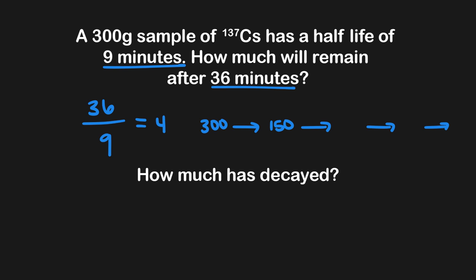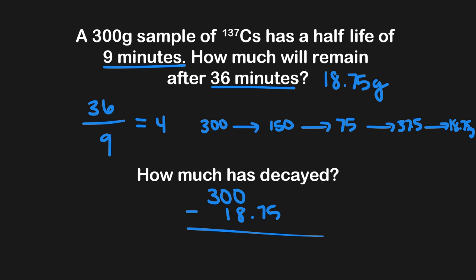So 300 is halved to 150, then 150 becomes 75, half of 75 is 37.5, and half of 37.5 is 18.75 grams. So the amount remaining after 36 minutes is 18.75 grams. If we want to know how much has decayed: we started with 300 grams and end with 18.75 grams, so 300 minus 18.75 equals 281.25 grams decayed. It's really important to note the difference — whether the question asks about remaining or decayed — because we get drastically different correct answers for each.